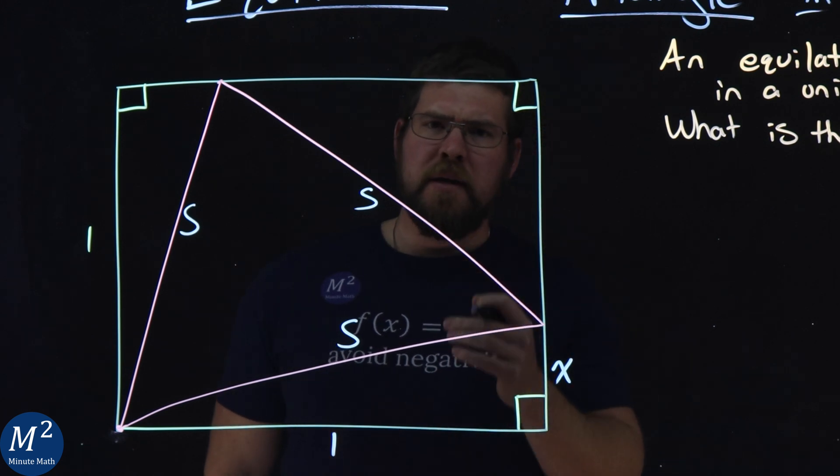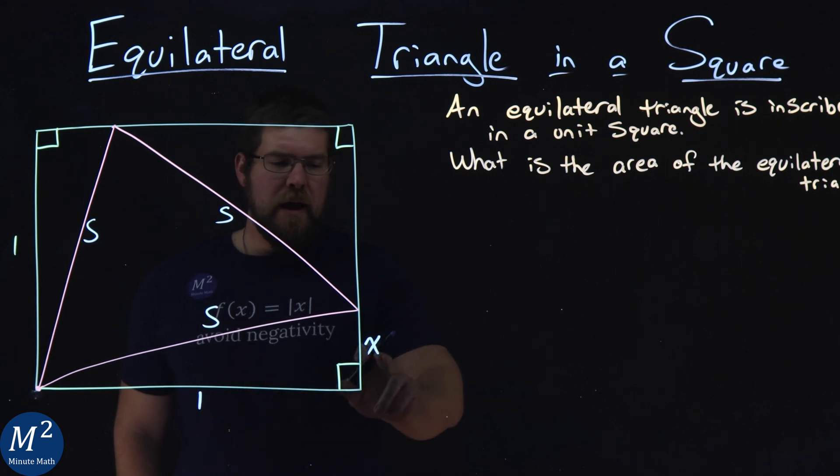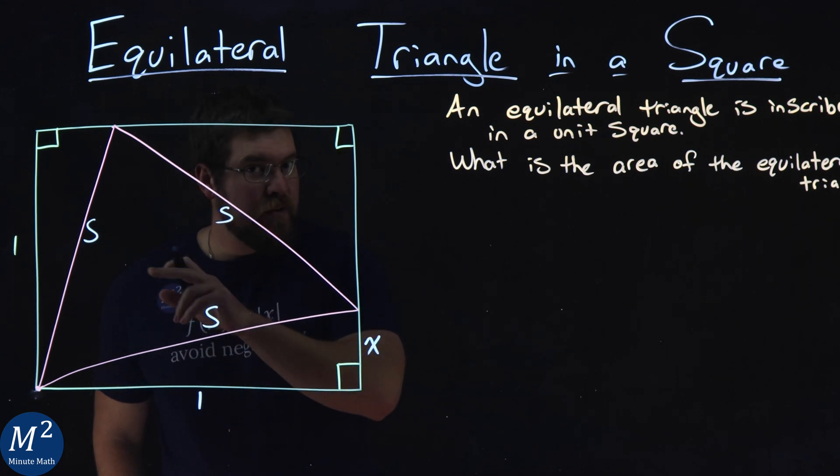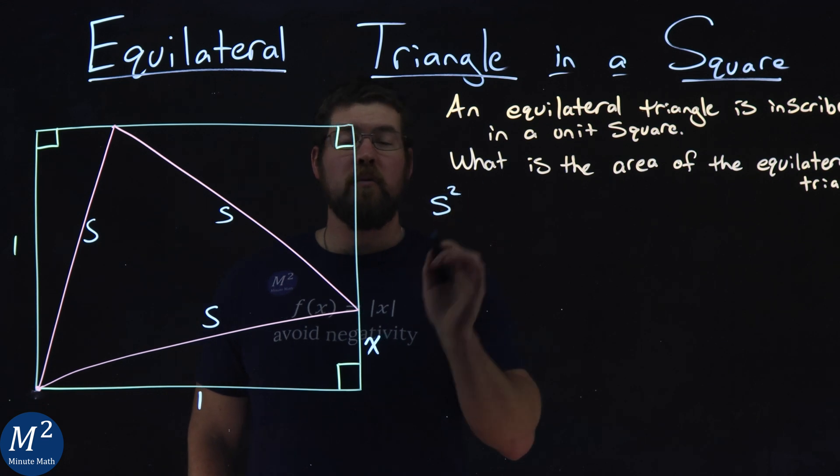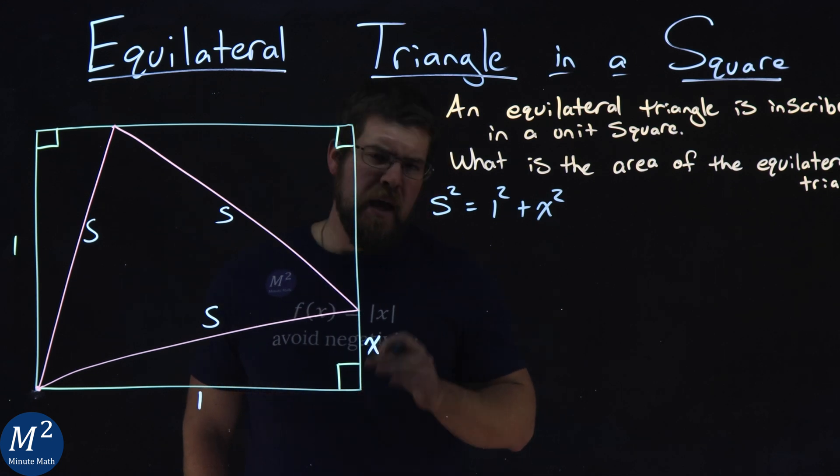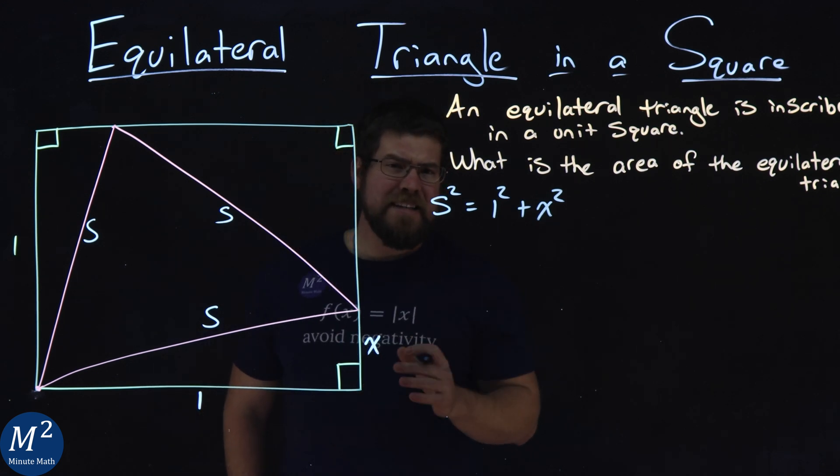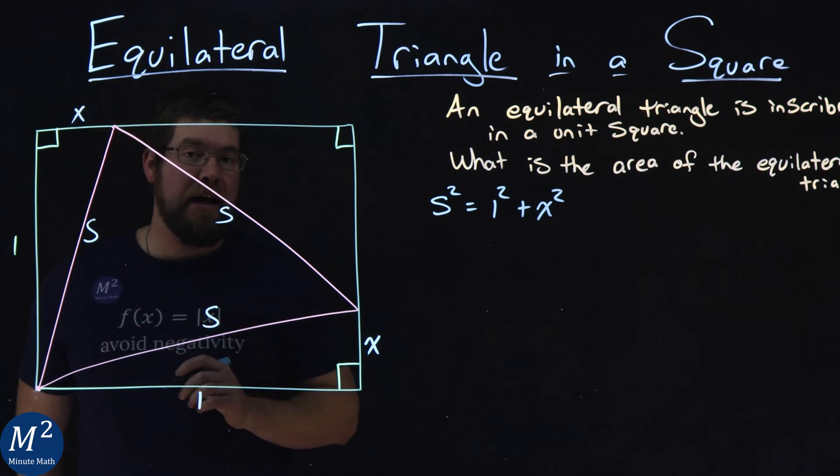Well, with that being said, what do we also know here? Since we have one, X, and a length of S here, the Pythagorean theorem tells us that our side length squared is equal to 1 squared plus X squared. And with that information, we can tell then that this value here has to be X as well.